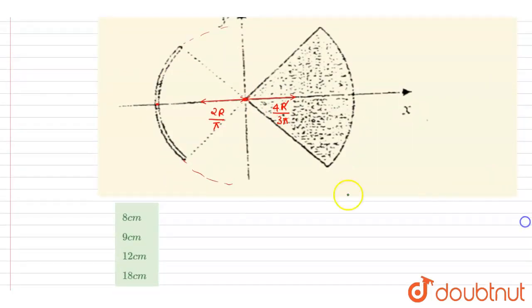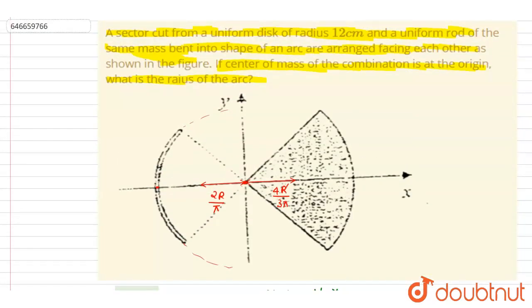So now I will write down the x-coordinate of the center of mass. It is m1 x1 plus m2 x2 divided by m1 plus m2. So if you see here, the masses you can compare.